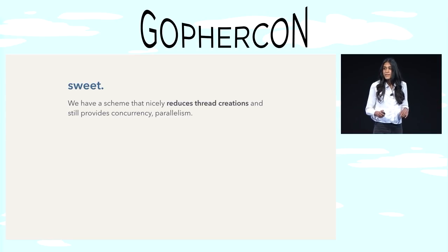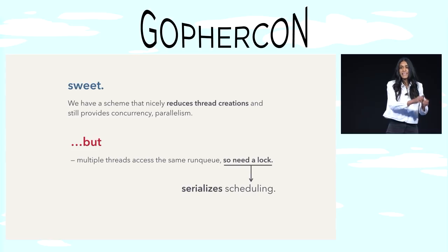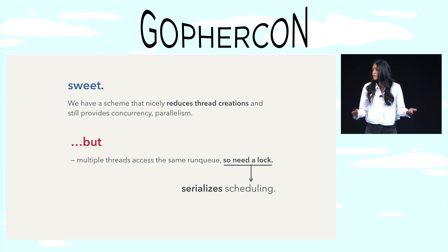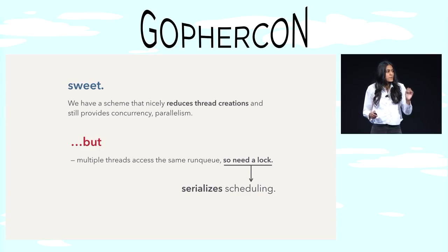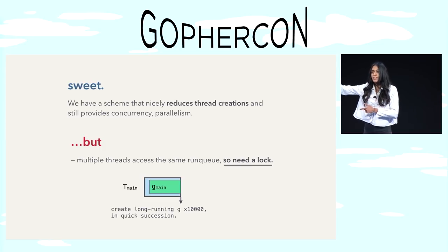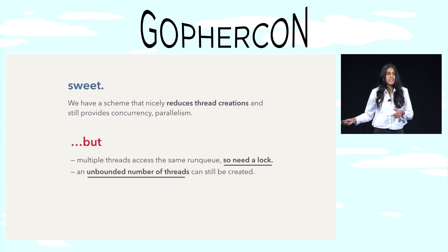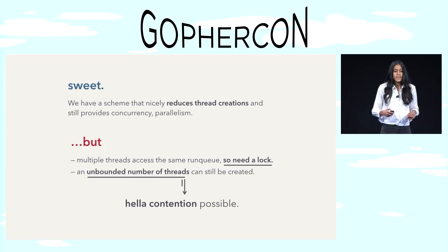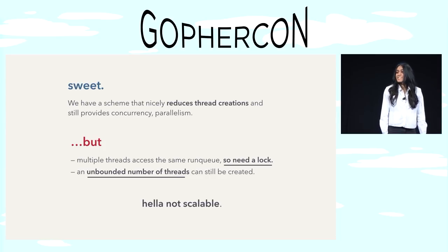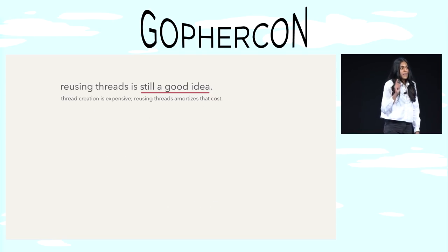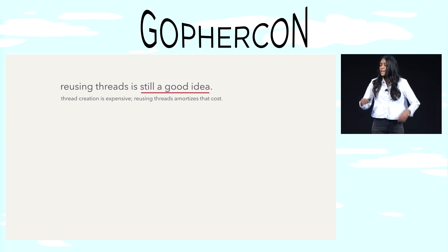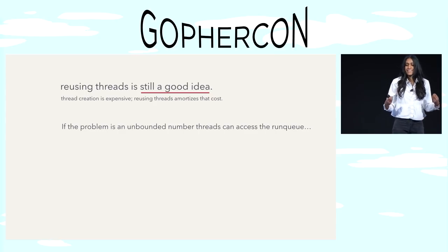Anybody see any problems with this scheme? Well, we have many threads mutating a single data structure, so we need a lock. And locks are inherently bad for scalability — they effectively serialize goroutine scheduling. We can only schedule one goroutine at a time. But there's a bigger problem: what happens if G main creates 10,000 long-running goroutines in quick succession? We're going to create 10,000 threads, so we can still have an unbounded number of threads accessing the run queue. An unbounded number of threads accessing a shared data structure with a lock means massive contention — the scheme is not scalable. That said, the idea of reusing threads is still a good idea, so we'll hold on to it.